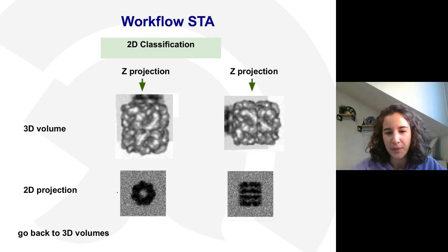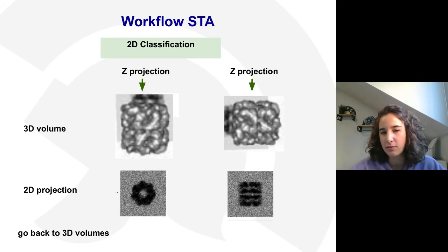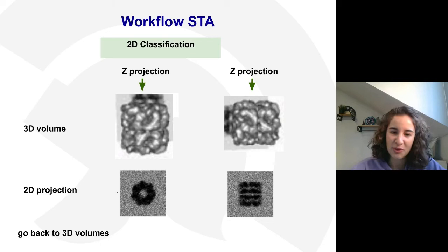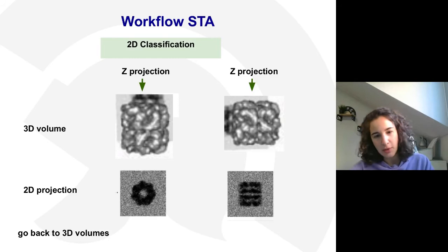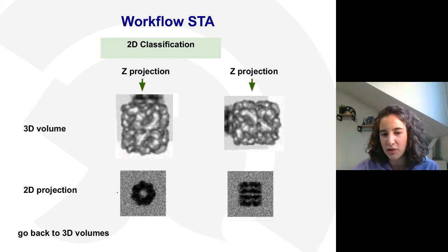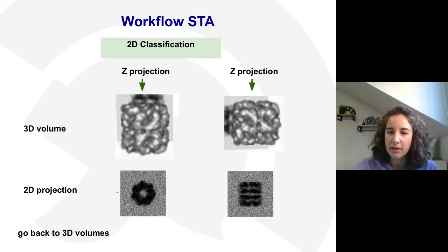The reason to perform classification in 2D instead of 3D is that it is much cheaper in terms of time and resources. Another reason is that once we compute the projections, we have particles equivalent to those in single particle analysis, meaning we can use all the methods we know for 2D classification in single particle analysis to classify our projected subtomograms. Another way to convert volumes to 2D images could be just taking the central slice, for example.